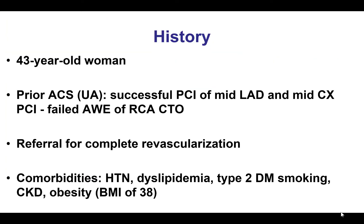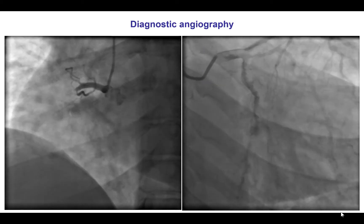The patient was a young woman who presented with unstable angina and was found to have three-vessel disease. It was decided to attempt multi-vessel percutaneous revascularization, so she underwent PCI of the LAD and the circumflex. However, she had a right coronary CTO that could not be recanalized, and she was referred to achieve complete revascularization.